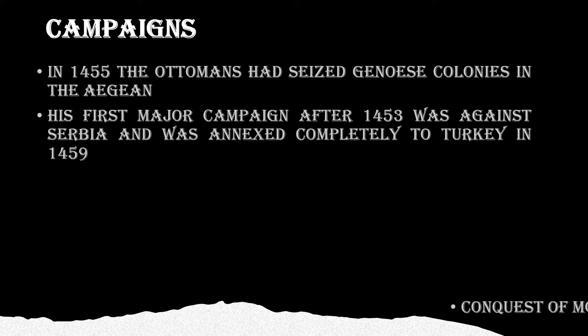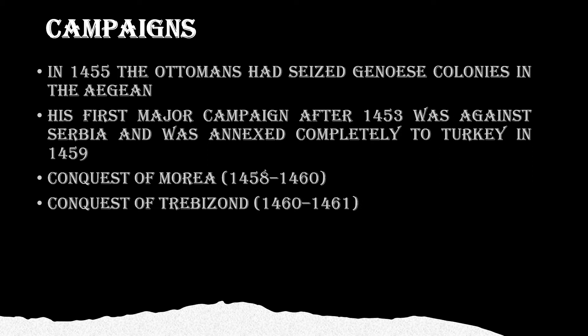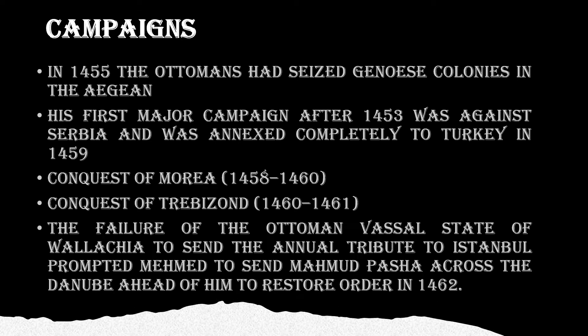He also started a campaign against Morea in 1458 and completed it by conquering Morea in 1461. He also had to deal with Wallachia, as they refused to pay the annual tribute to the Ottoman Empire. Muhammad al-Fatih sent Mahmood Basha, who restored Wallachia to Ottoman control in 1462.